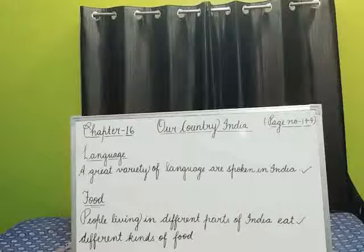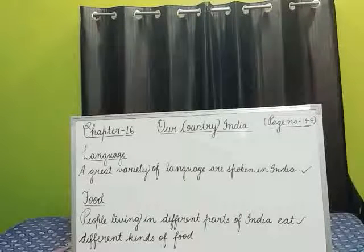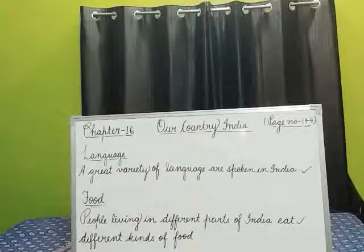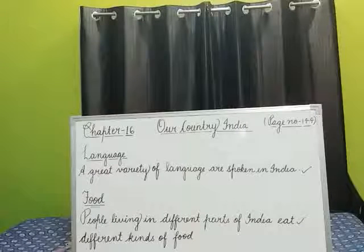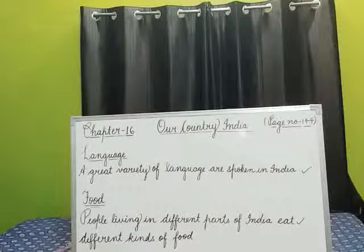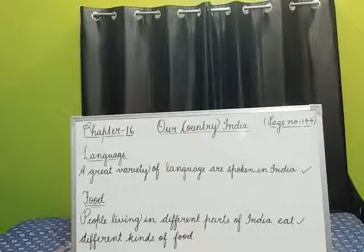People use mustard oil, desi ghee, groundnut oil, and coconut oil for cooking food. Nowadays, people also use olive oil, as it is healthier than other oils like mustard oil and groundnut oil, so it is used more.